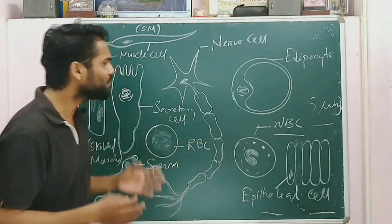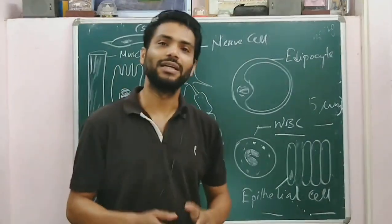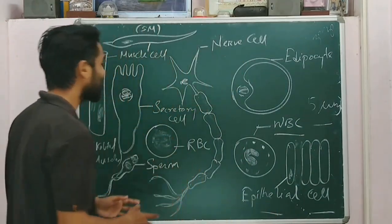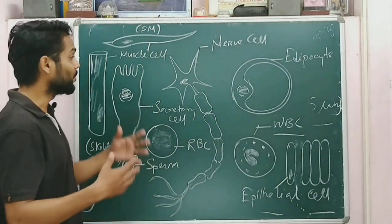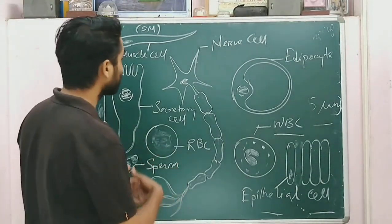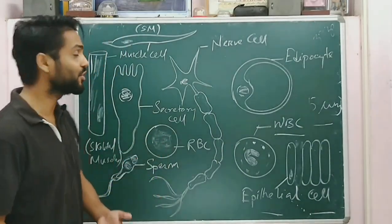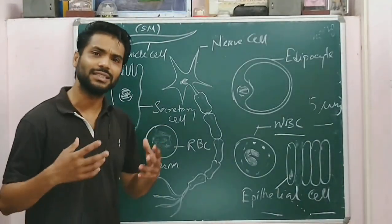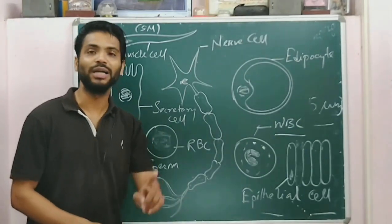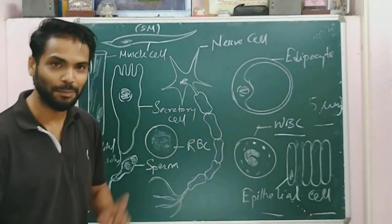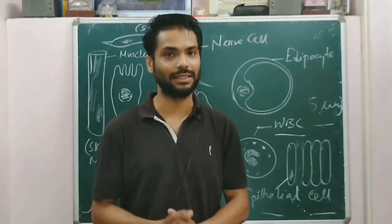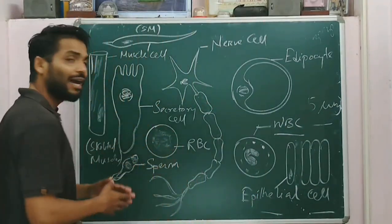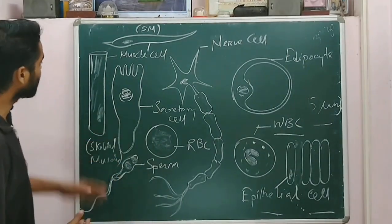Whenever we talk about any multicellular organism, inside them we get some tissues and sometimes organs. Within tissues we get cells. If it is a simple tissue, there will be one type of cell. If it is a complex or compound tissue, there will be multiple kinds and types of cells, each with different functions.